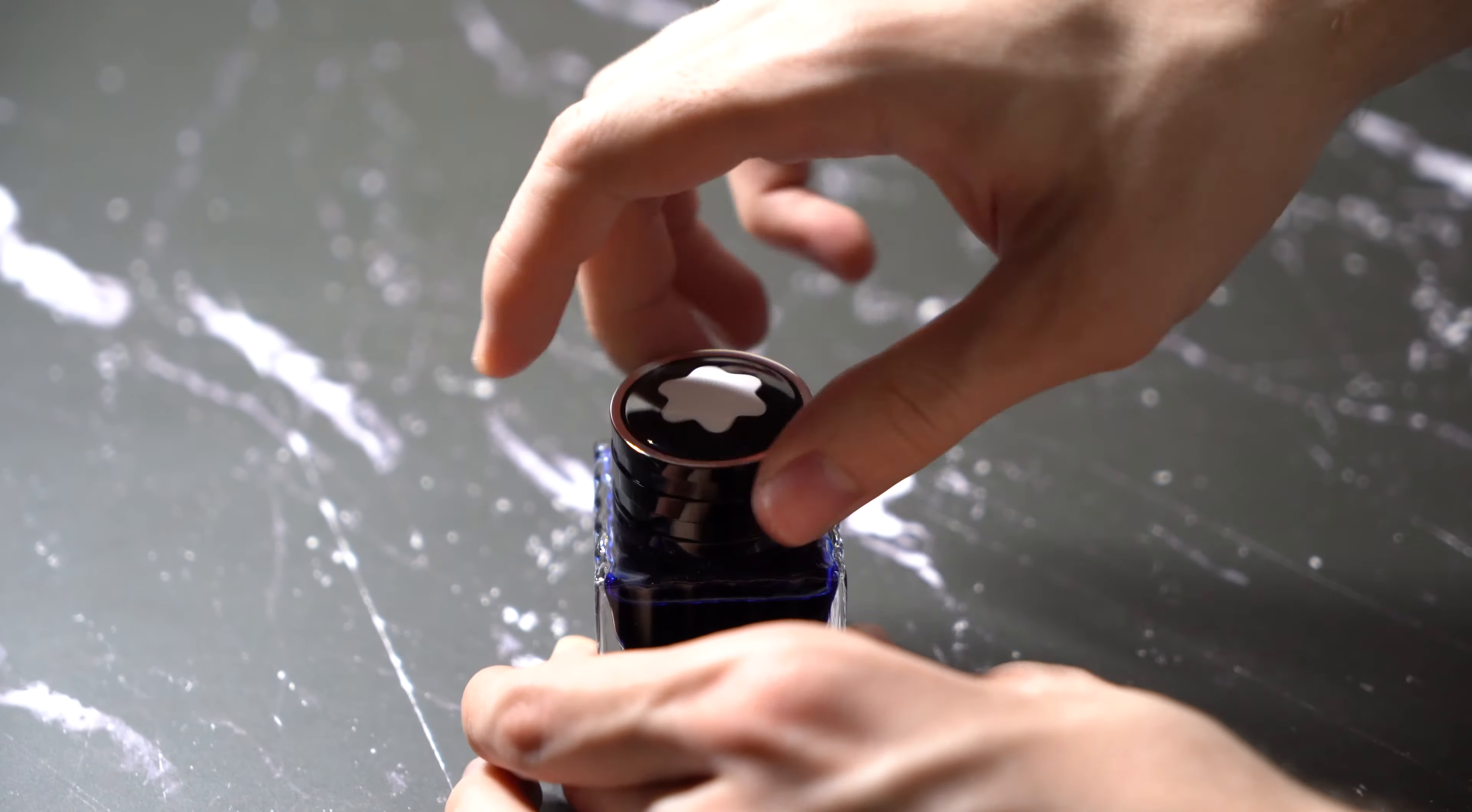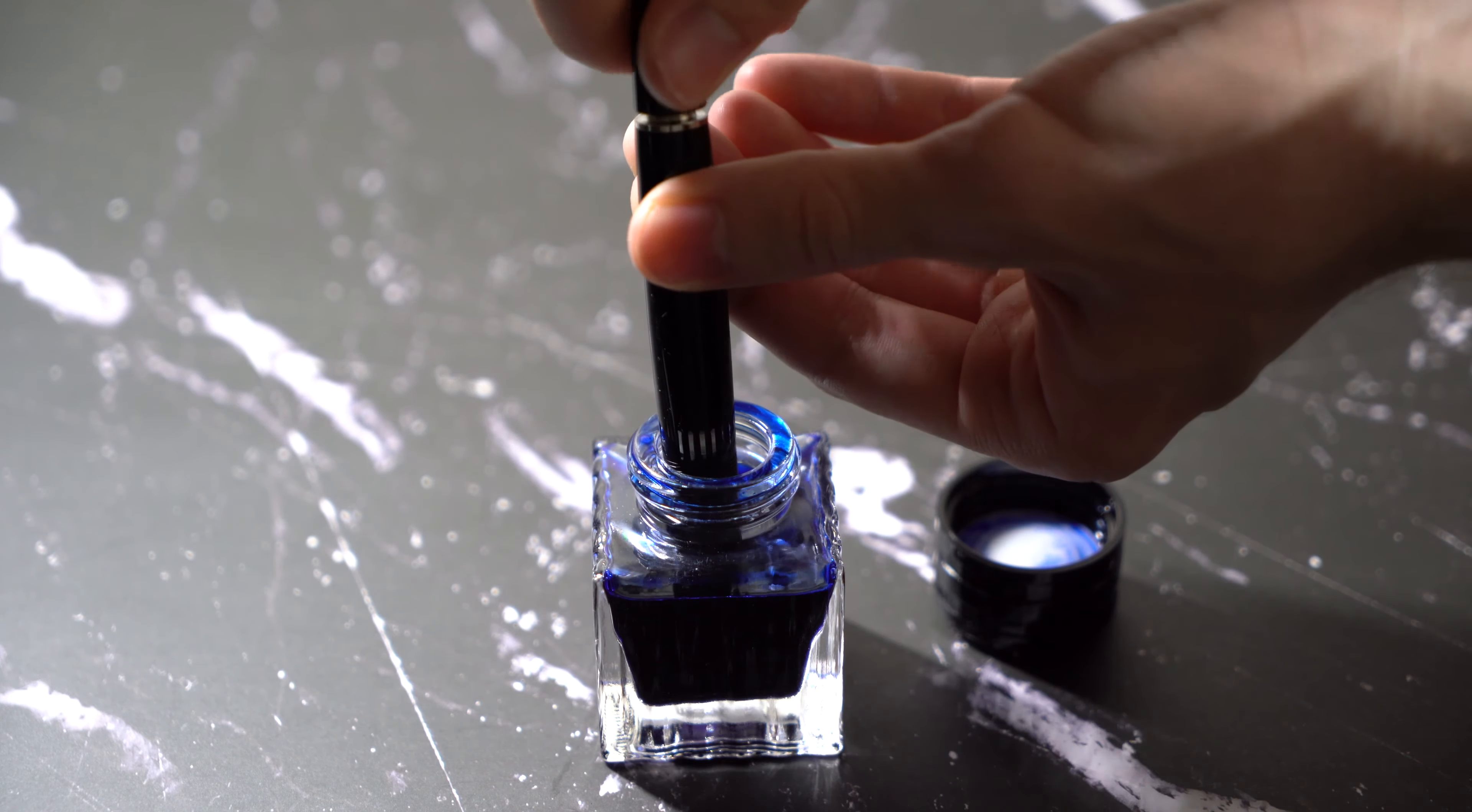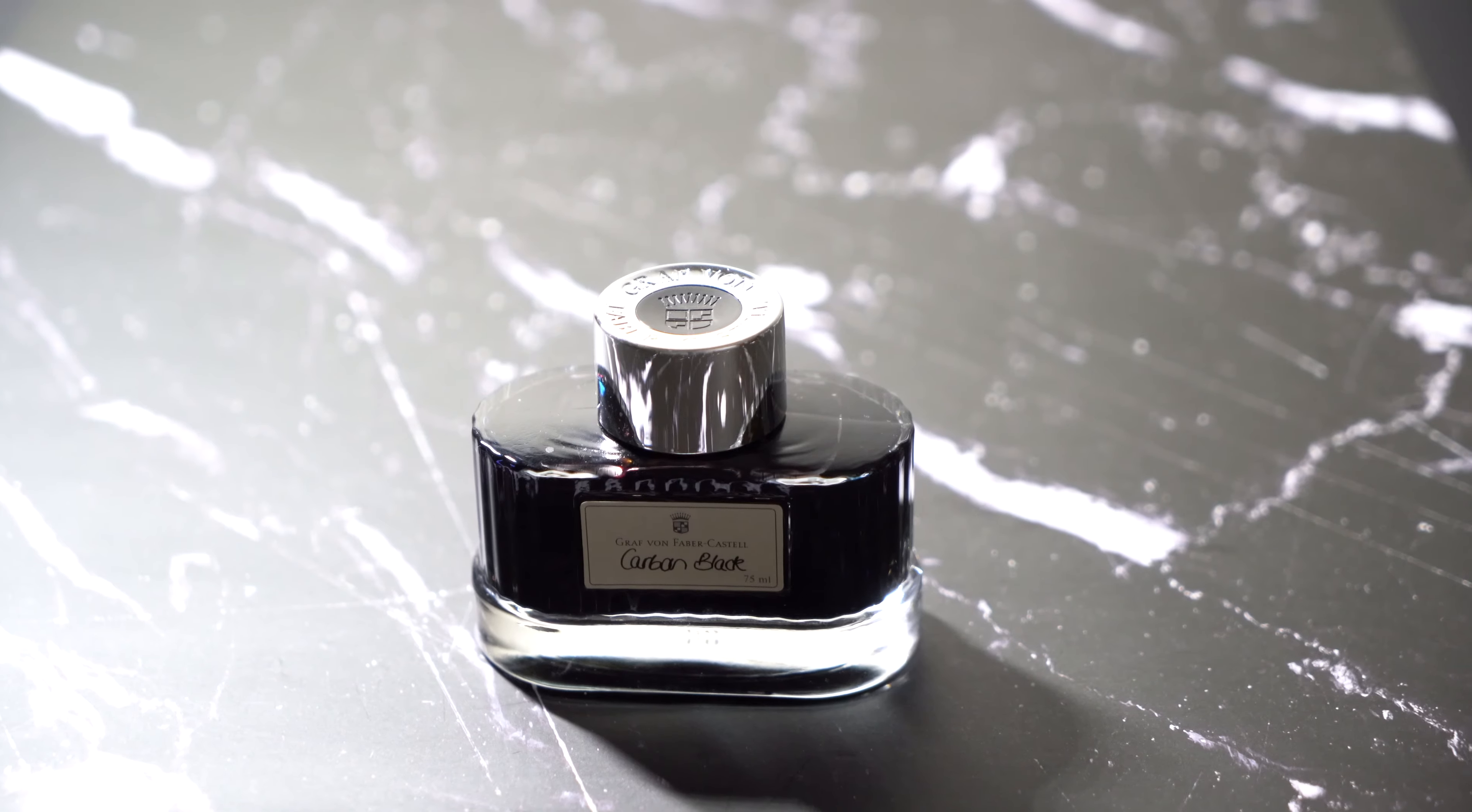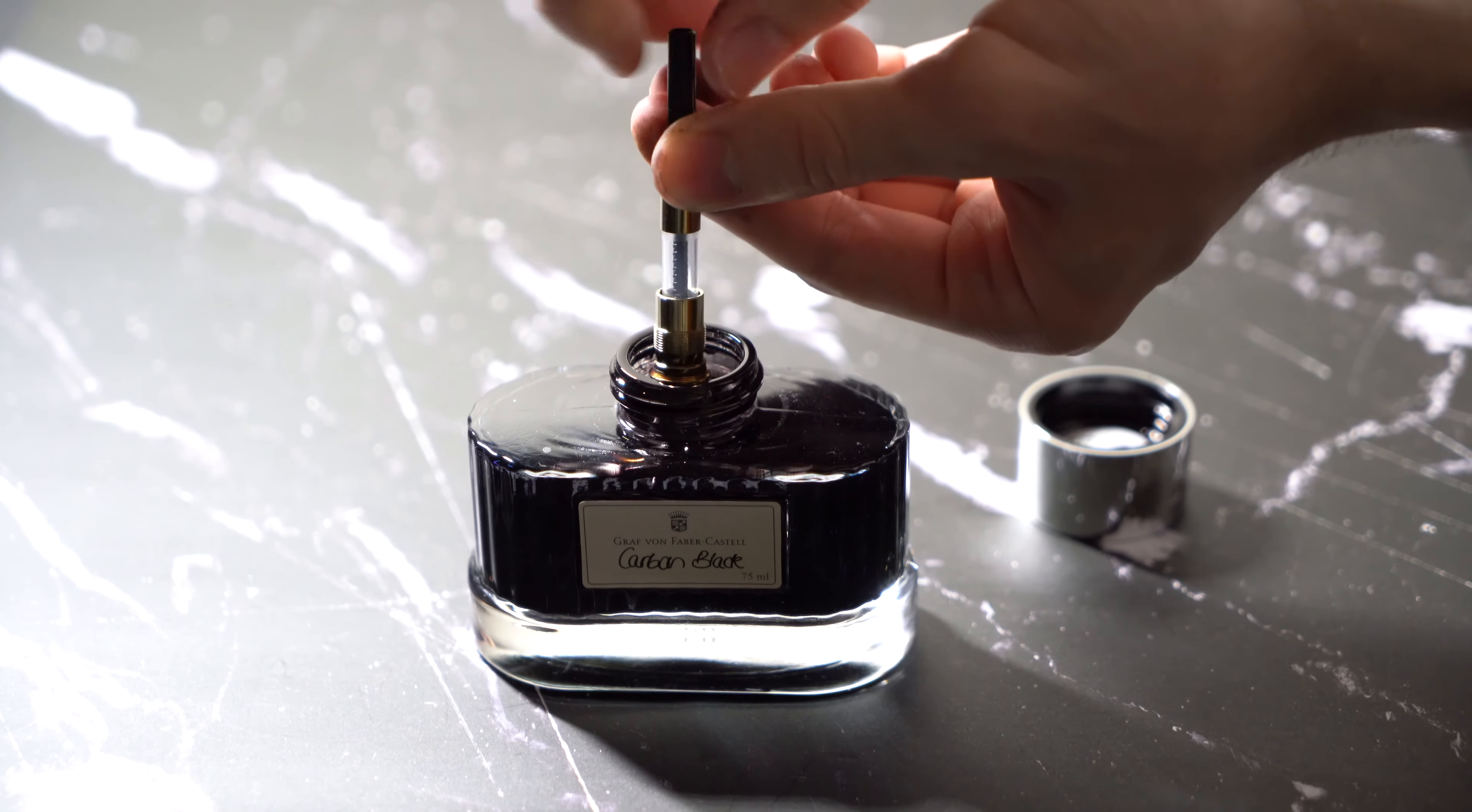In terms of mechanism, the 146 is a piston filler converter so it holds more ink. It holds about 1.1 ml of ink, whereas the 1911 Large holds about I think like a regular cartridge converter. But Sailor converters are smaller than usual, similar to Platinum. They don't hold that much ink. It holds probably like 0.7 ml of ink.